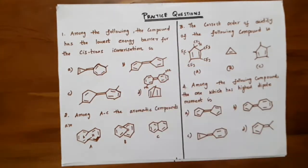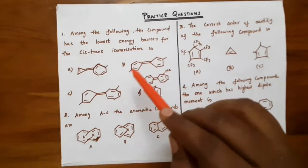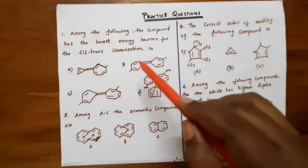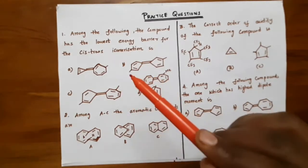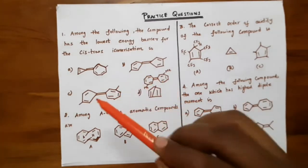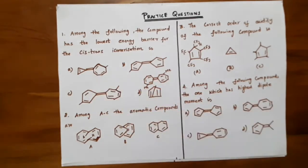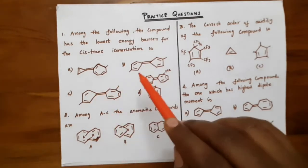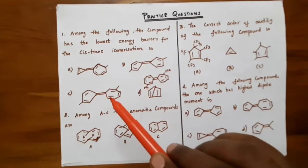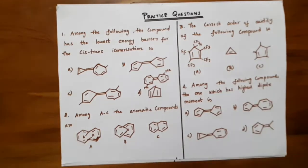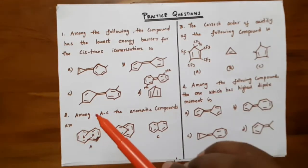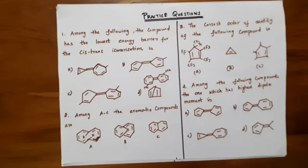What is cis-trans isomerization and when does it take place? Cis-trans isomerization takes place in alkenes. In single-bonded compounds, the cis-form is converted into the trans-form or vice versa. But here, if you see the options, they are all consisting of exocyclic double bonds. In the case of carbon-carbon double bond compounds, the rotation is restricted.